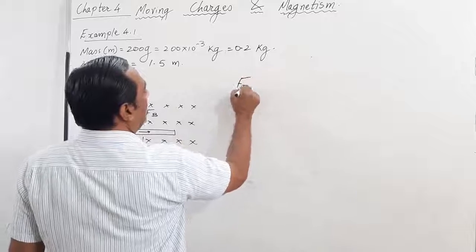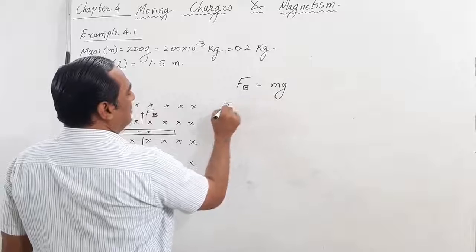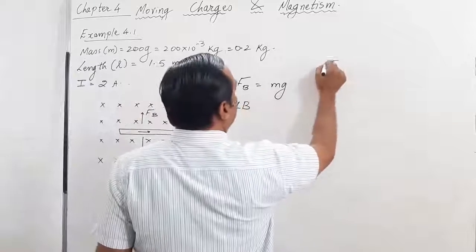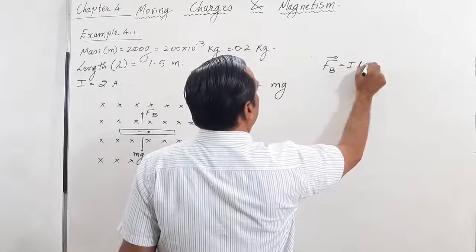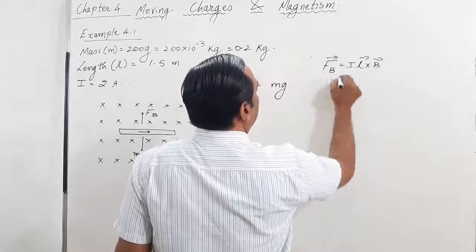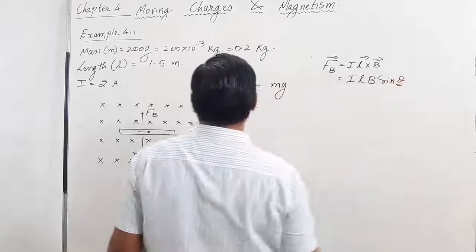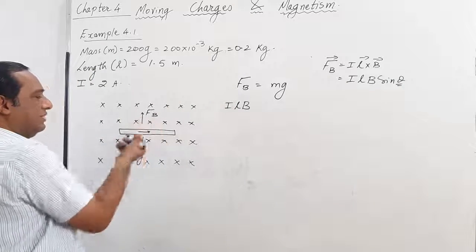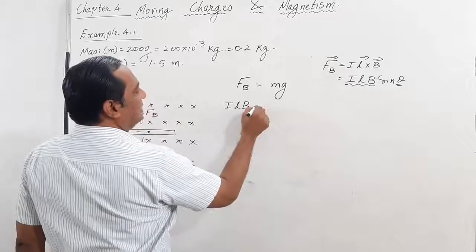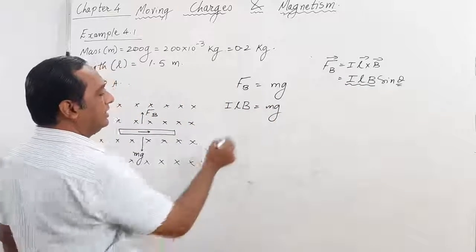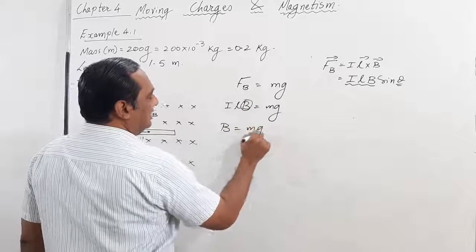So you have FB is equal to mg. Now, the magnitude of this force is given by ILB. Remember that FB is equal to IL cross B. I can write this as ILB sin theta. But theta is 90 degrees because the direction of magnetic field and the direction of current are perpendicular to each other. So I can simply write ILB is equal to mg. We have to find B. So B is equal to mg upon IL.